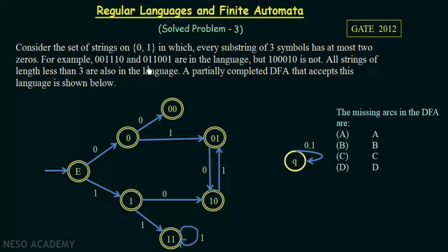Similarly for 011001, any combination of three consecutive symbols has at most two zeros — for example, the last three symbols 001 have only two zeros. But for the string 100010, if I take the second, third, and fourth symbols I get 000 — three zeros — which is not acceptable since we are allowed at most two zeros. That is why this string is not in the language.